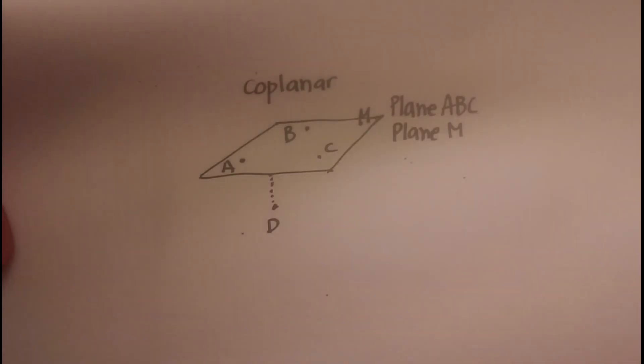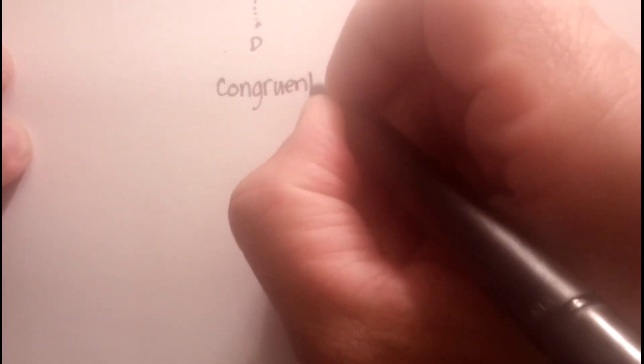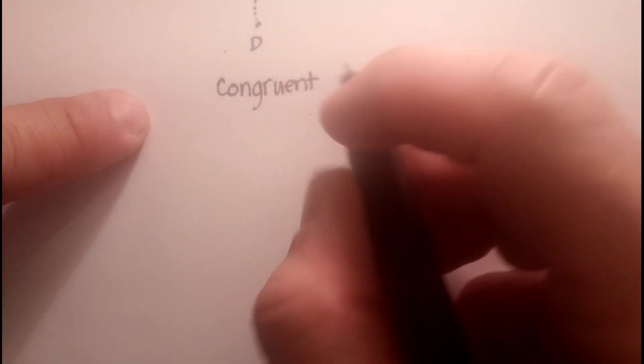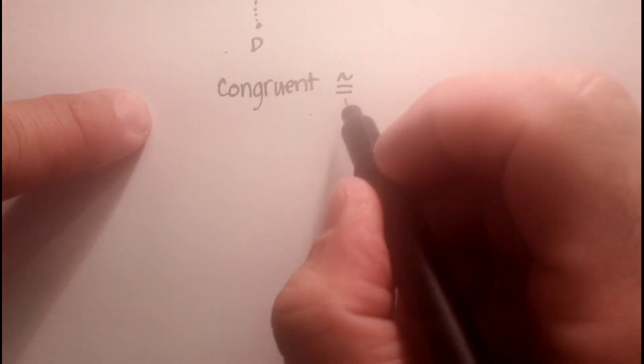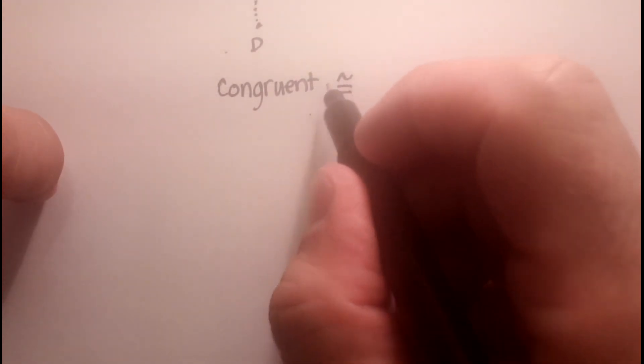And finally, let's look at our last point, and that's congruent. Now congruent in my book is probably the most important term of these three, but let me show you why. Congruent. Now the symbol for congruent is this. It's an equal sign with a little wavy part above it.